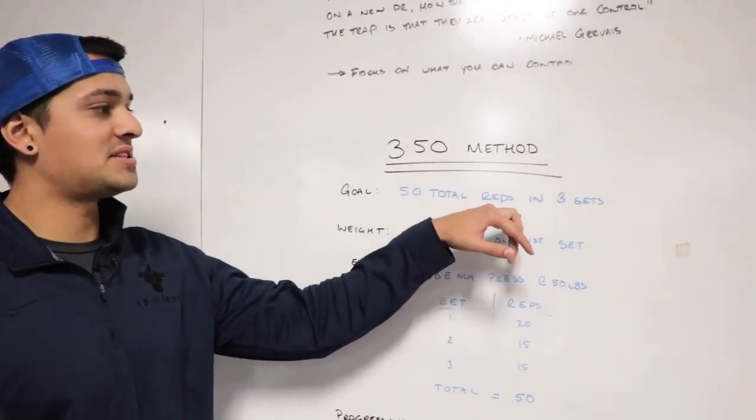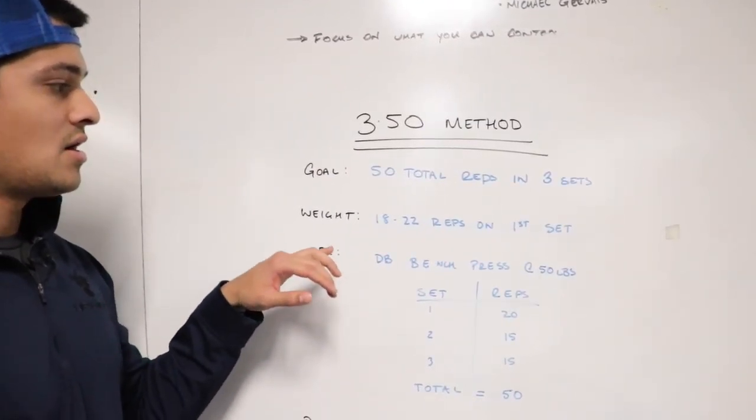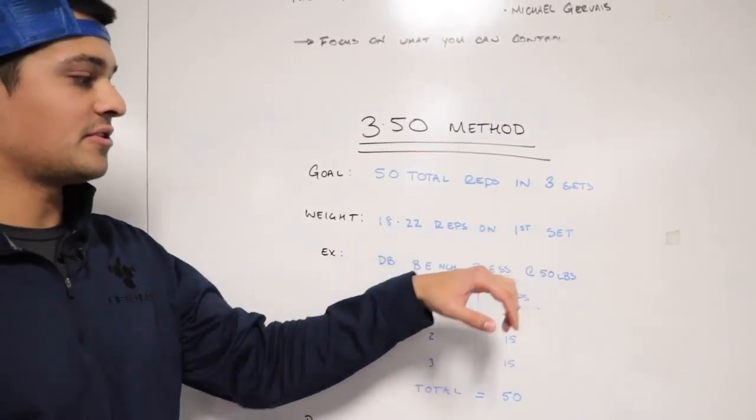Essentially what it is, you're going to do 50 total reps in three sets. You're going to start with a weight that you can do for 18 to 22 reps on your first set.